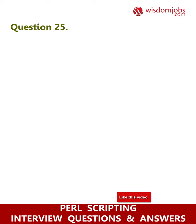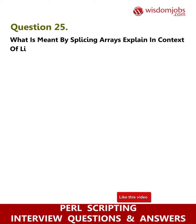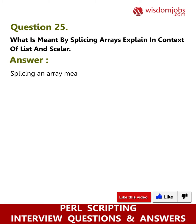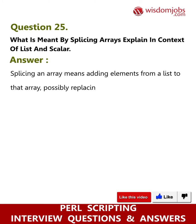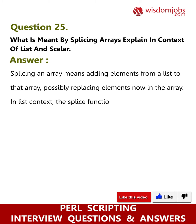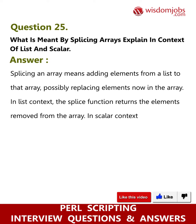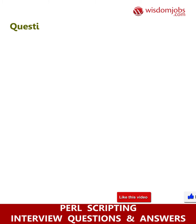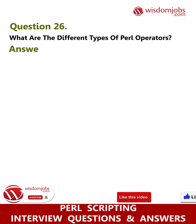Question 25: What is meant by splicing arrays — explain in context of list and scalar? Answer: Splicing an array means adding elements from a list to that array, possibly replacing elements currently in the array. In list context, the splice function returns the elements removed from the array. In scalar context, the splice function returns the last element removed.